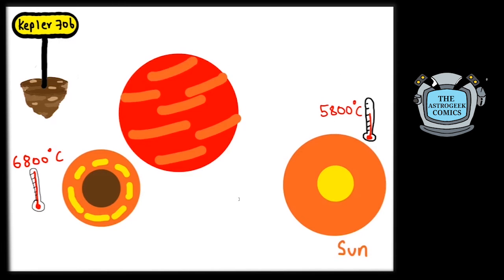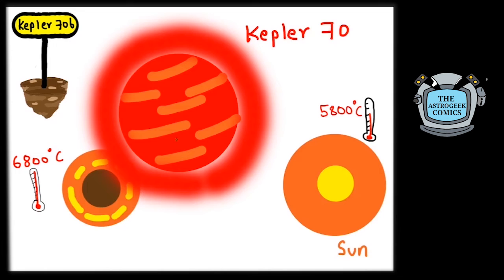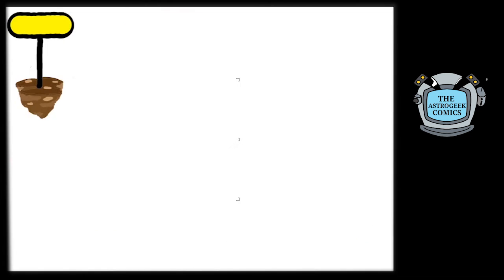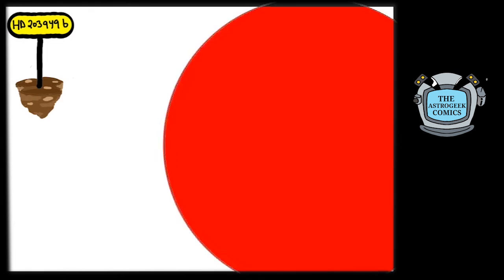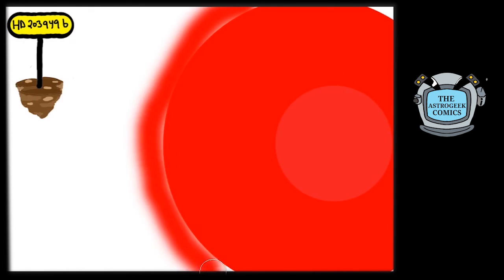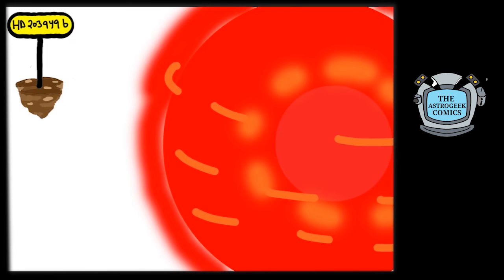This planet even survived being inside its now-dead star. In fact, it is still evaporating and will soon disappear forever. But none of these planets, be it the badass planet HD 203949b, which orbits so close to a red giant star that it should not even exist.